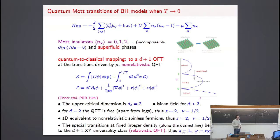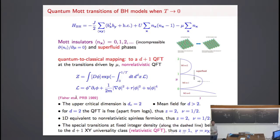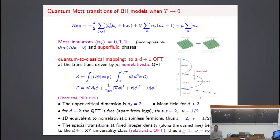If you do the calculation you find that the theory is not anymore the standard phi-to-the-fourth theory, but there is a further term which arises from non-relativistic Schrödinger equations — this is a non-relativistic quantum field theory associated with non-relativistic particles. The critical behavior described by this theory has its own peculiar behaviors, observed when we change the chemical potential along these lines of Mott transitions. At a special point, the linear derivative term cancels and you get back a relativistic quantum field theory.